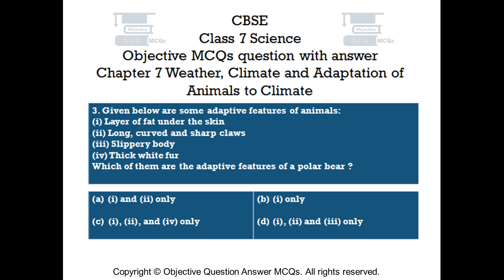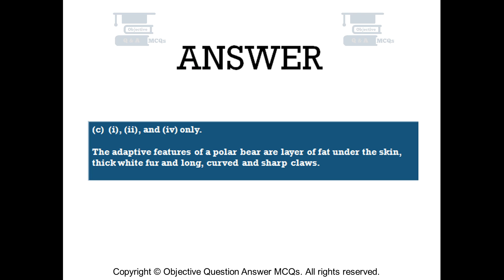Option A — 1 and 2 only. Option B — 1 only. Option C — 1, 2, and 4 only. Option D — 1, 2, and 3 only. The right answer is Option C: 1, 2, and 4 only. The adaptive features of a polar bear are layer of fat under the skin, thick white fur, and long, curved and sharp claws.